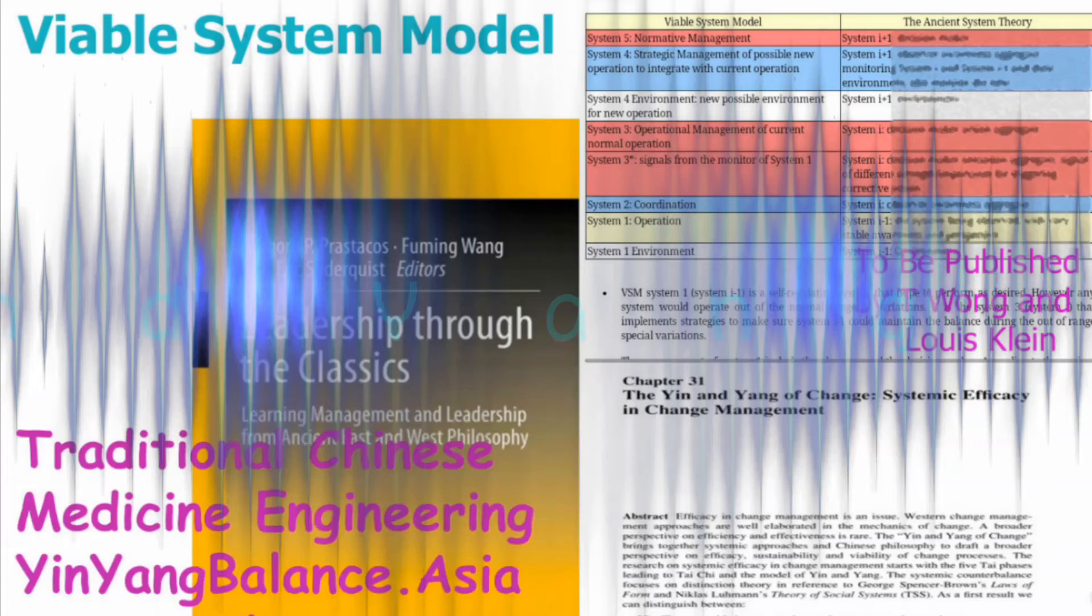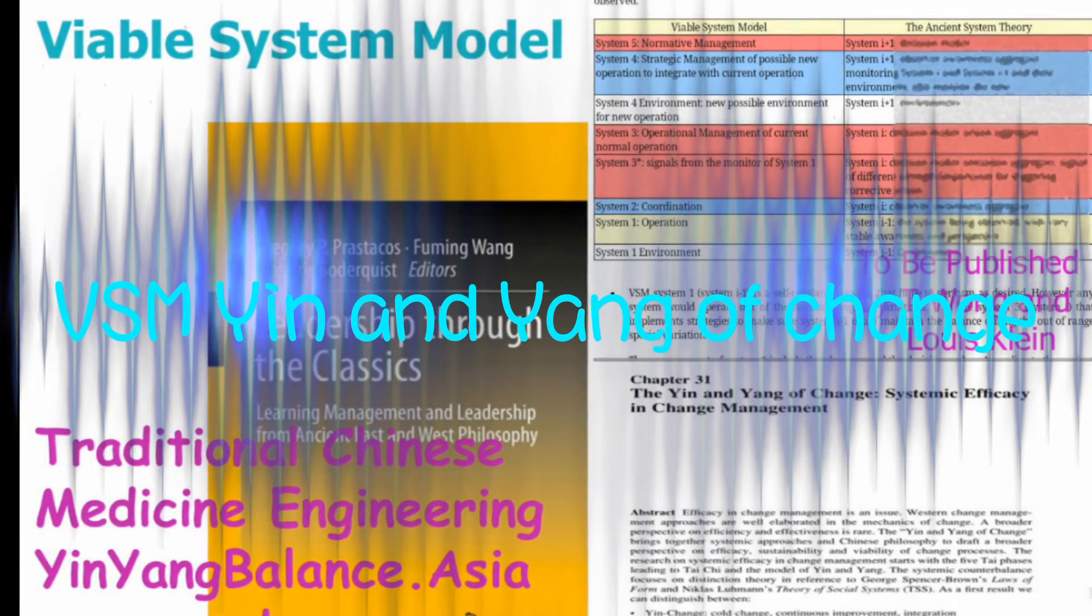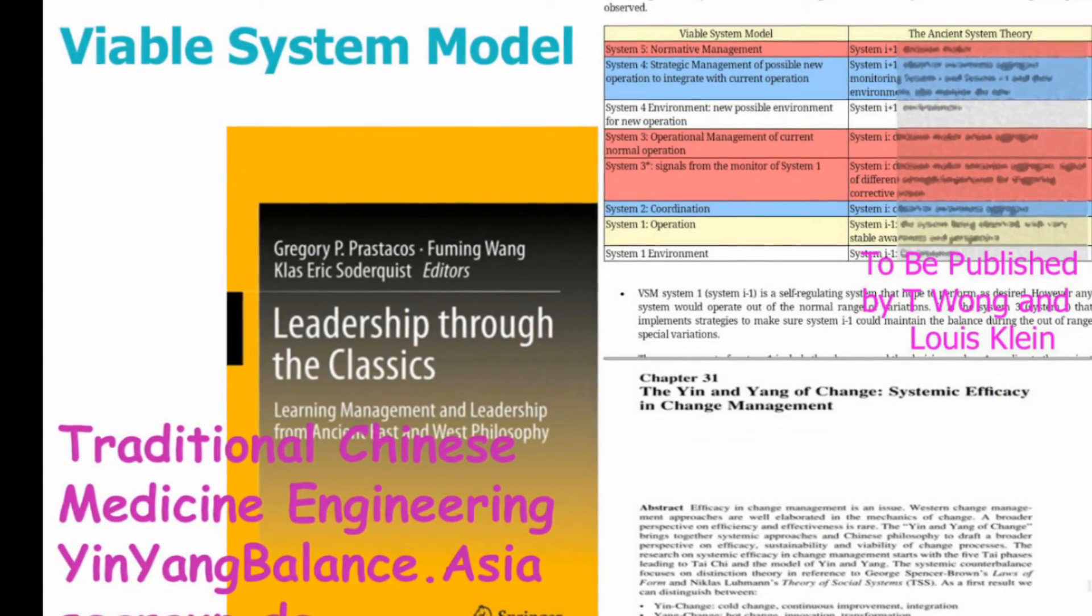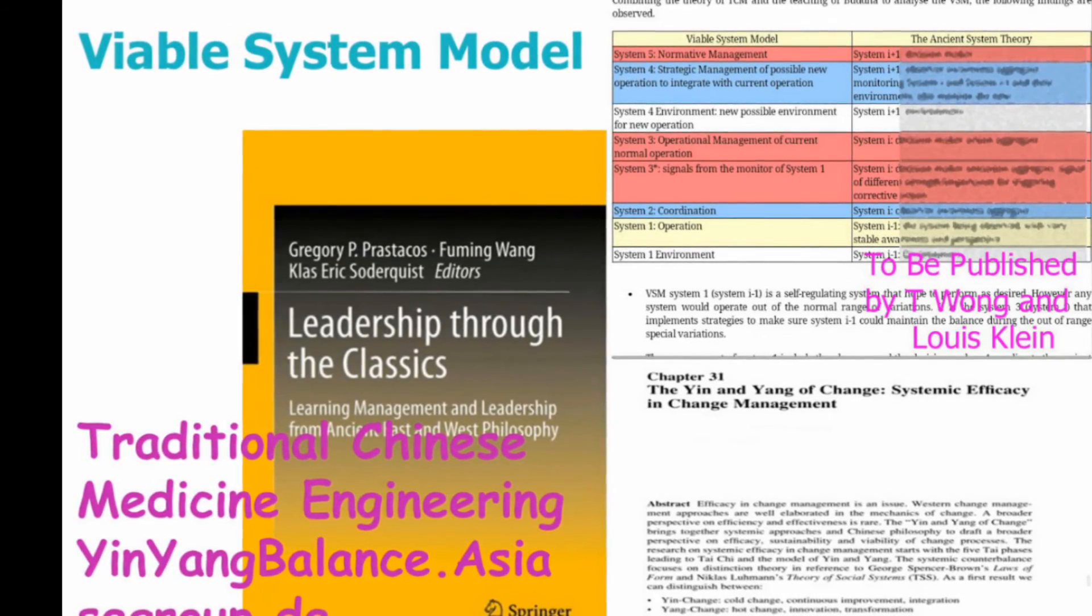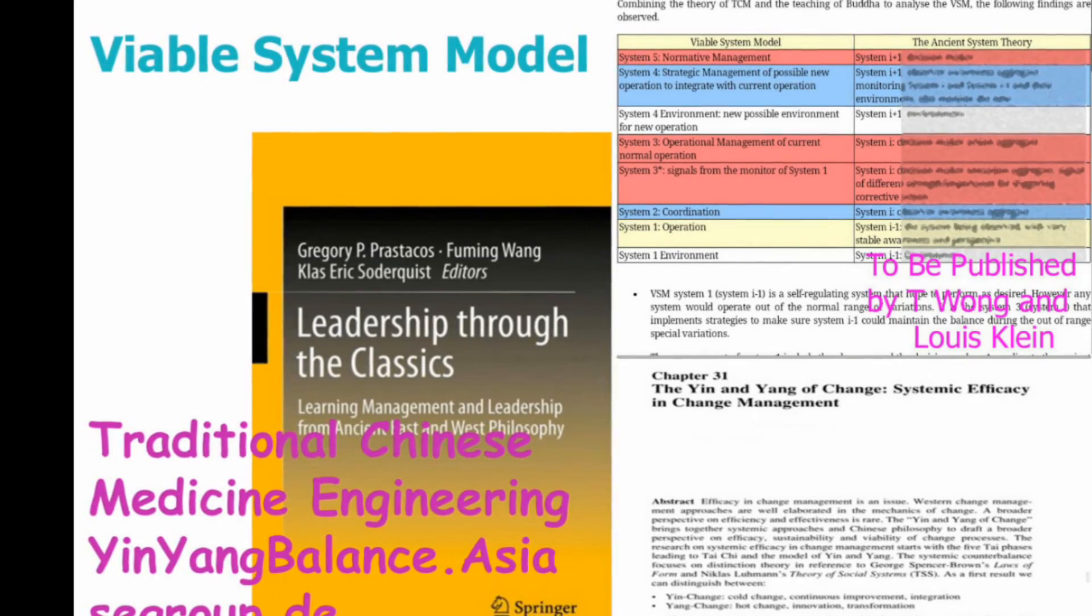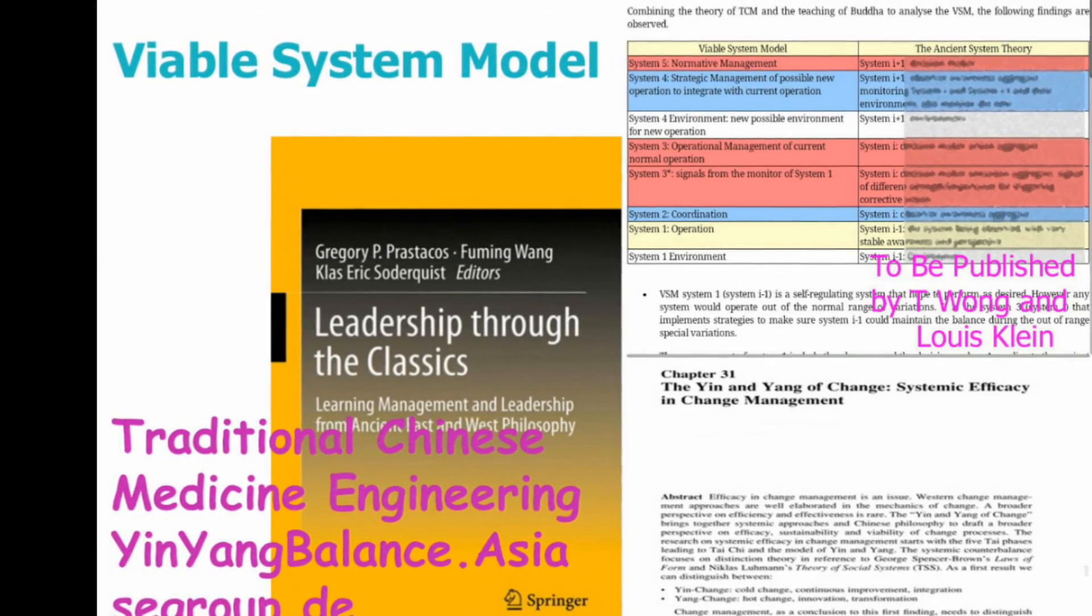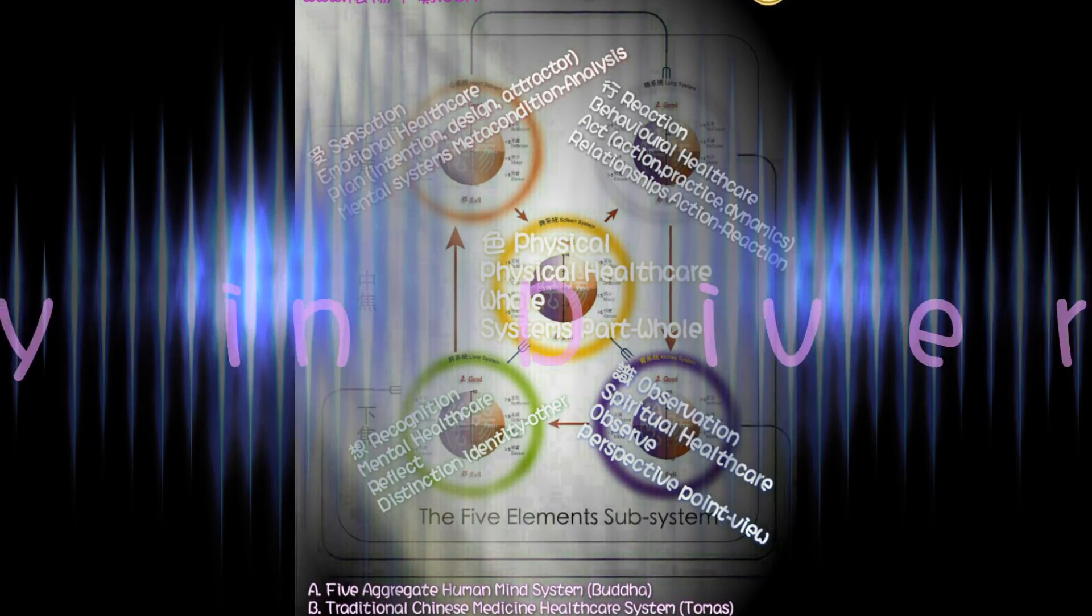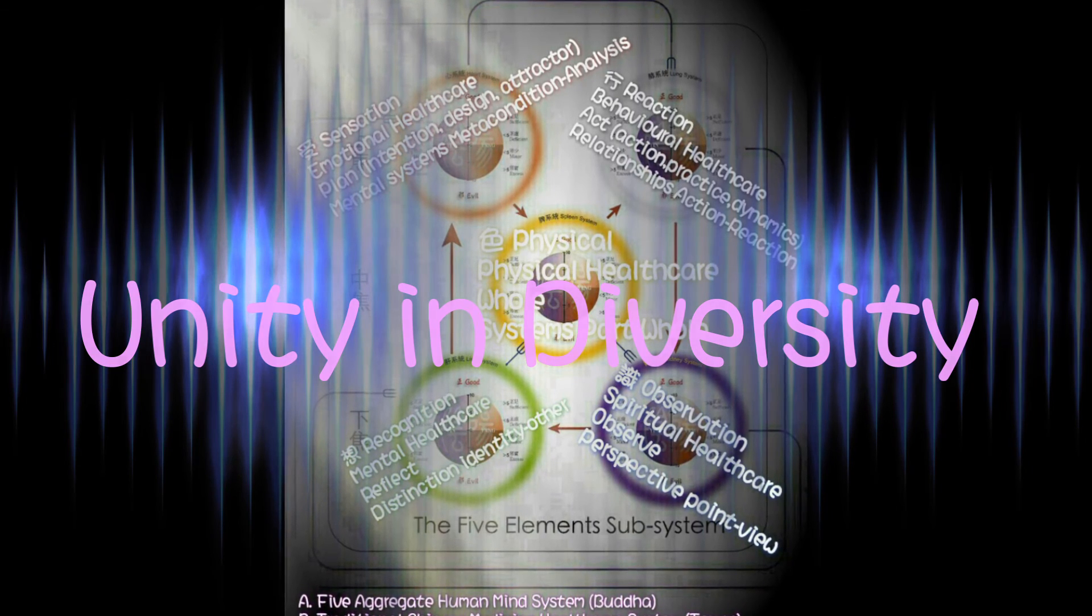We can also apply that to the viable system model. That's what I'm doing with Maurice Yolles. We did a paper on the yin and yang of change and got published in The Leadership of the Classics by Springer. This is what we are working on - a little bit blurred, it will be clear when we publish our paper. Here we have got everything together. A coincidence or the truth?